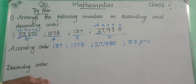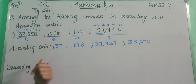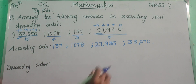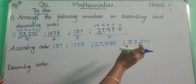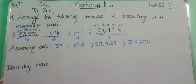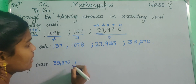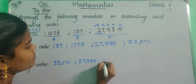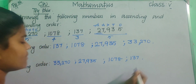Now let us write the descending order. Descending means greatest to smallest, and ascending means smallest to greatest. We already arranged this in ascending order, so we can write the descending order as the reverse: 33,270, then 27,935, then 1,078, and then 137.